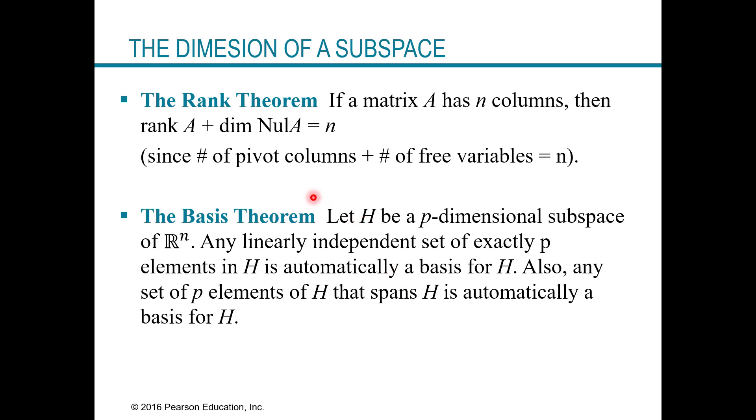Alright, so just a few more things to mention. We have the rank theorem, which says if a matrix A has n columns, then the rank of A plus the dimensions of the null space of A total n when you add them up. And the reason for this is because rank of A is just a number of pivot columns. And then the dimension of the null space is equal to the number of free variables. So if you add up pivot columns plus free variables, that's n.